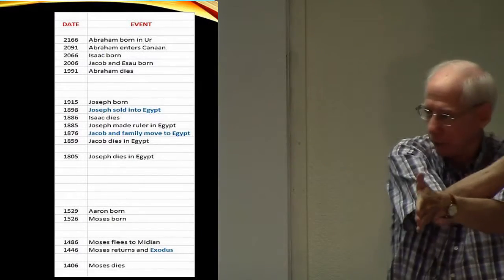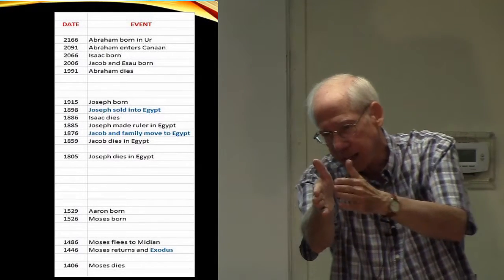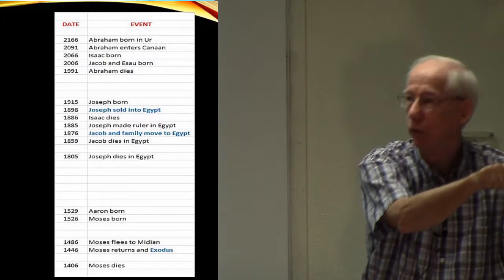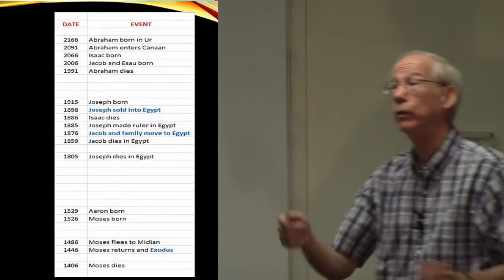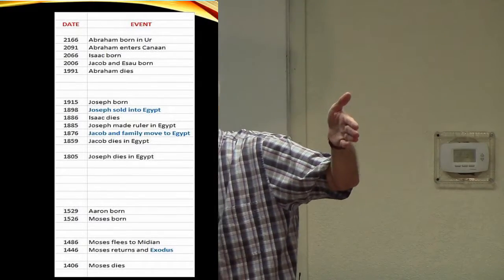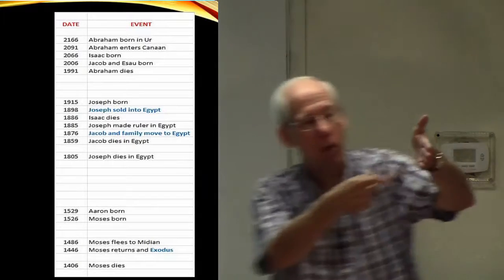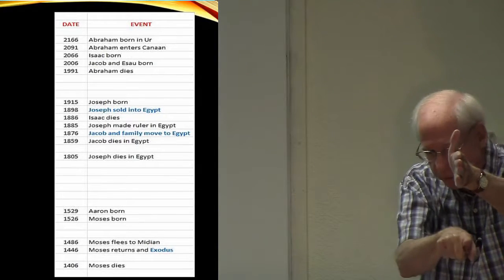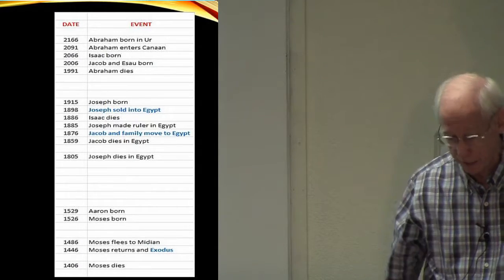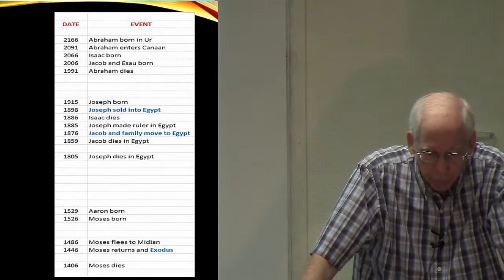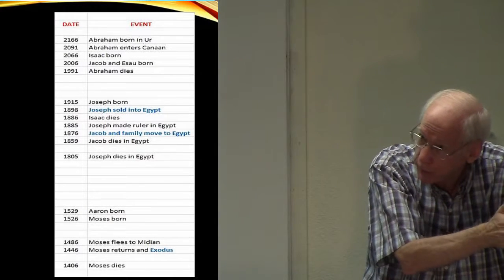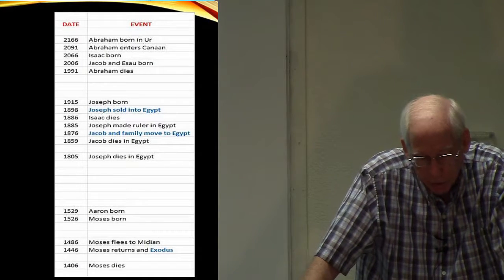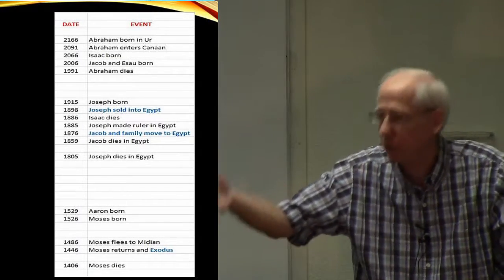Working backward from Ahab's last year of 853 B.C. through the Israelite kings' chronologies, we find that the first Israelite king Jeroboam came to the throne around 931–930 B.C. — which is the year of Solomon's death. We know Solomon reigned 40 years, so he began his reign around 971–970 B.C. And 1 Kings 6:1 says Solomon began to build the temple in the fourth year of his reign — which puts us at 966 B.C.